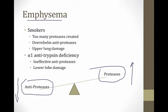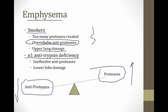The most common type of emphysema is the type we see in smokers. Smoke creates proteases that overwhelm the antiproteases, and as a result the lungs get damaged. The damage in smokers' emphysema is predominantly in the upper lobes — an easy way to remember this is to think of smoke rising up to the upper lobes. The second type is very rare, occurring in patients who have alpha-1 antitrypsin deficiency. They have ineffective antiproteases, and their emphysema is predominantly in the lower lobes.